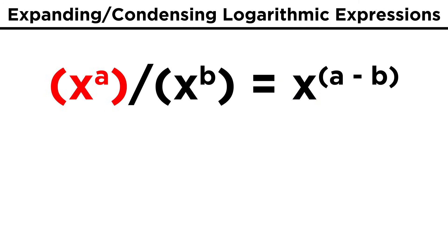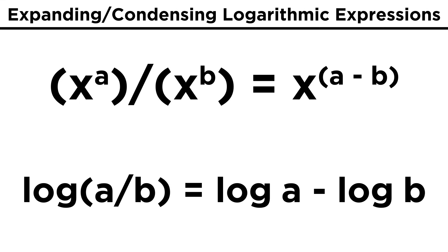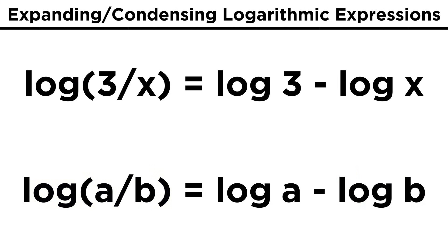We also know that X to the A over X to the B equals X to the A minus B, which again can be used to expand or condense certain expressions. Therefore, it is the case that log of A over B equals log of A minus log of B. This means that with something like log of three over X, we could express it as log of three minus log of X.